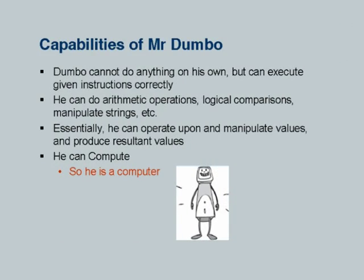We state some specific facts: Dumbo cannot do anything on his own but can execute given instructions correctly. Dumbo can do arithmetic operations, logical comparisons, manipulate strings, etc. In this single sentence we are able to convey the ability of the computer to do numerical manipulation of values, logical comparison, and string manipulation — the three major data types which are to be handled in our programs.